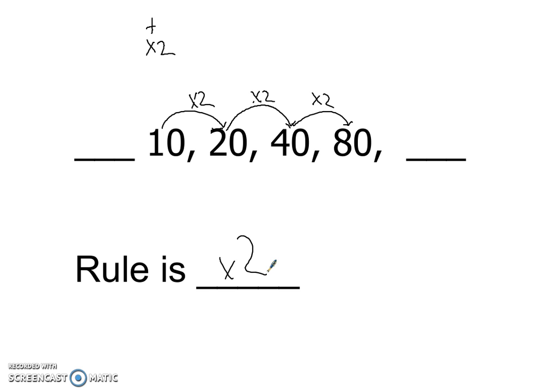So my rule is times 2. And I need to figure out 80 times 2. Zero, 160. And over here, something times 2 equals 10. I think most people can figure out that that's a 5. And if you can't, then you really got it from 10 divided by 2. So those are patterns.